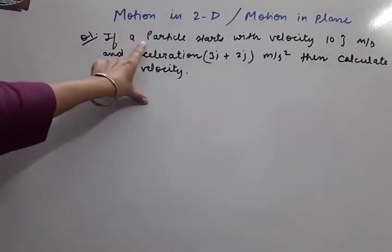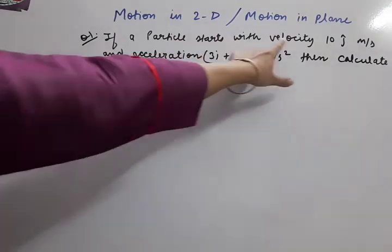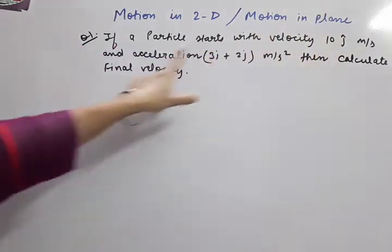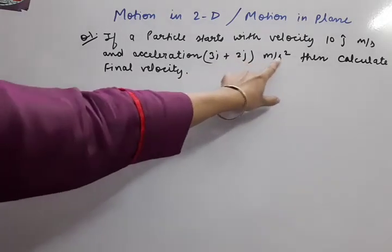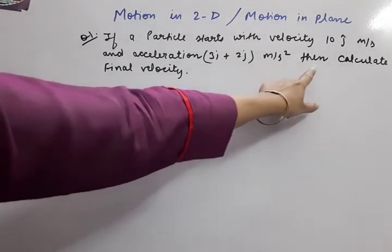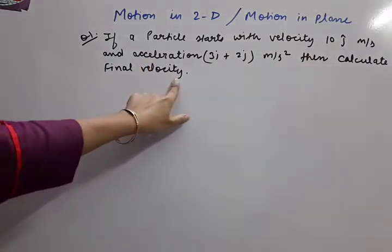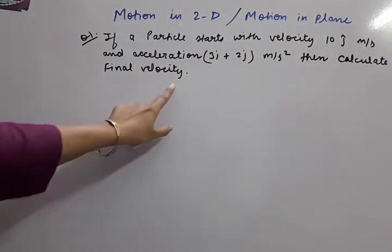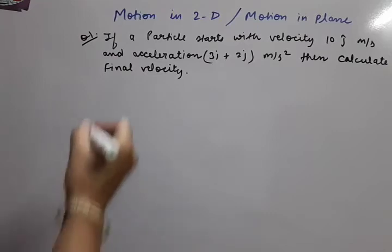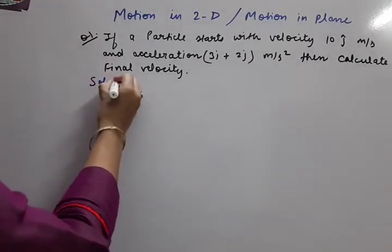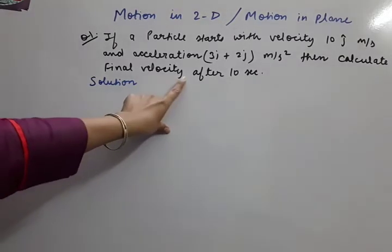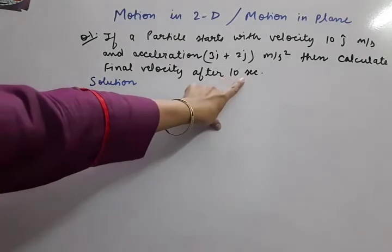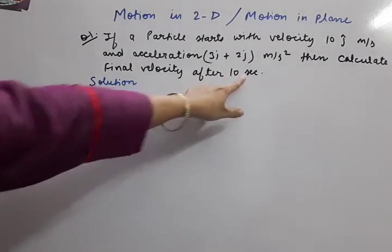Question number one: if a particle starts with velocity 10ĵ m/s and acceleration 3î + 2ĵ m/s², then calculate the final velocity after 10 seconds.